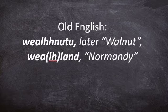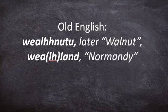Interestingly, we have the Old English word Walchnutu, which later became walnut — which is cool in itself. And then we have Waelhland, which refers to Normandy. Normandy, at one time, was under the Roman Empire, and so the people that lived there were assumed to be descendants of people of the Roman Empire.